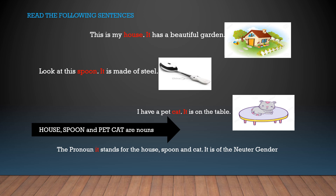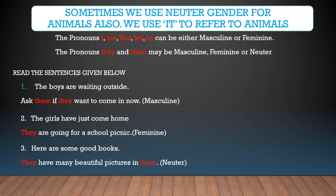Sometimes we use neuter gender for animals also — we use 'it' to refer to animals. The pronouns I, me, you, we and us can be either masculine or feminine. The pronouns they and them may be masculine, feminine or neuter — they and them is used for all three genders.